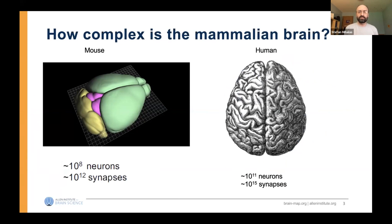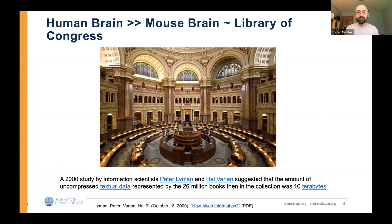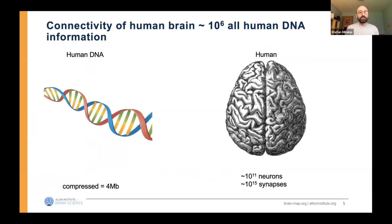The brain is incredibly complex, especially the mammalian brain. It's difficult to imagine how much information can be present. Even if we simplify it at the level of numbers of neurons and synapses, there are about 10 to the 12 synapses in a mouse brain, maybe on the order of 10 to the 15 synapses in a human brain. If we assume a few bits per synapse, a human brain ends up on the order of information comparable to a Library of Congress.